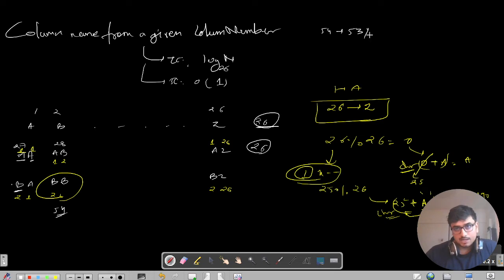52 modulo 26, 52 by 26 I will get 1, right? So I will again typecast it with addition of A so it will give me B. Correct, my last character is B, great.